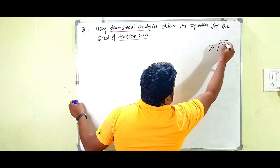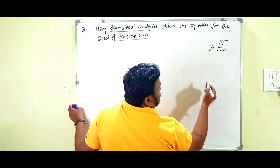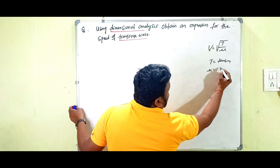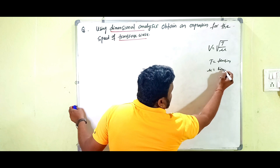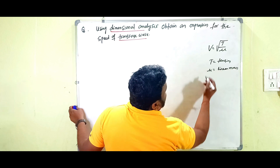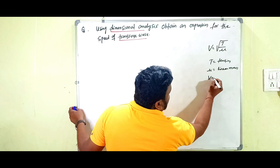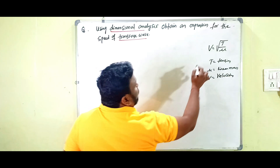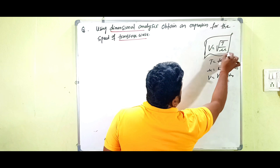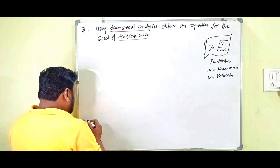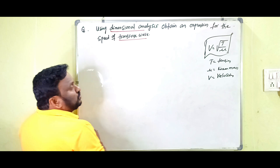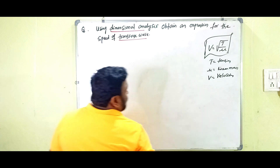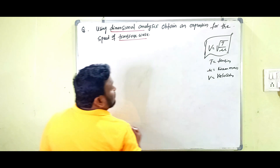The expression for speed of transverse wave is: v equals under root of T by μ, where T is the tension and μ is the linear mass density. Here v is velocity, and μ (linear mass density) is also written as mu.